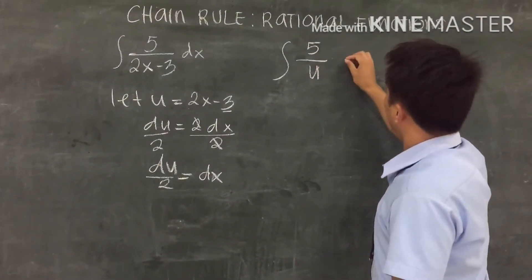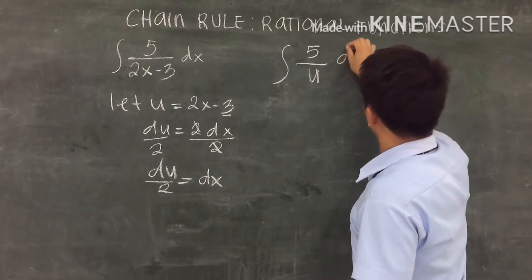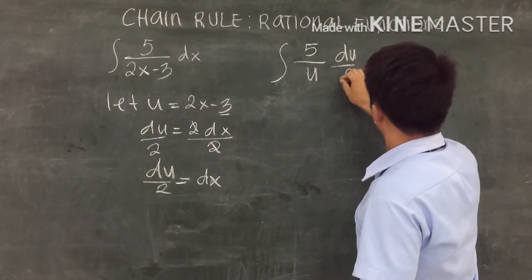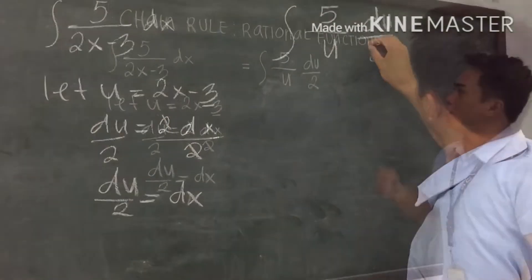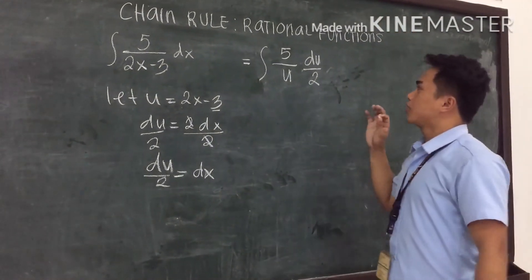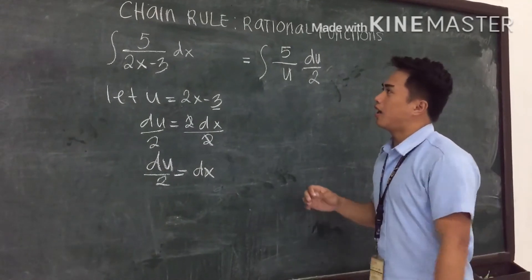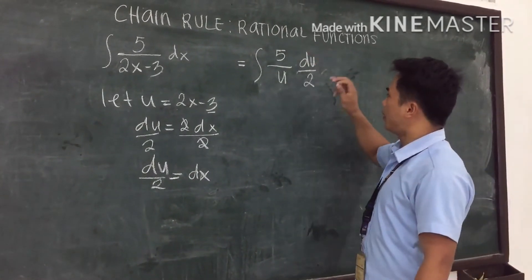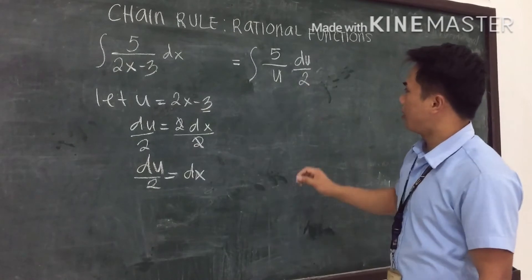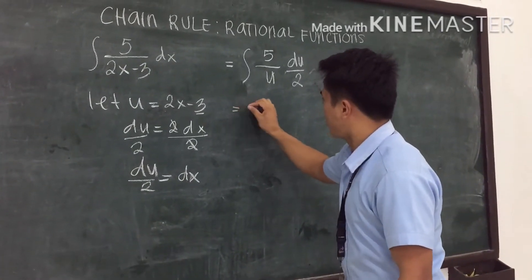In the next steps we need to transpose the constant to the left side or outside the integral sign, which is the 5 and the 2 on the lower side.